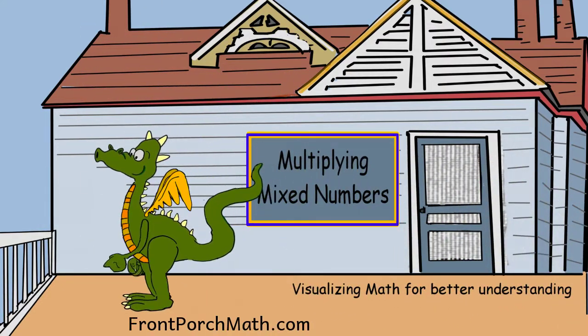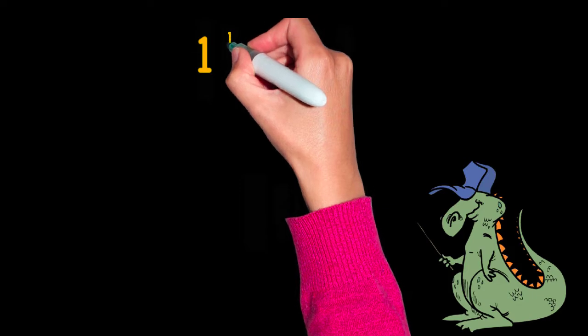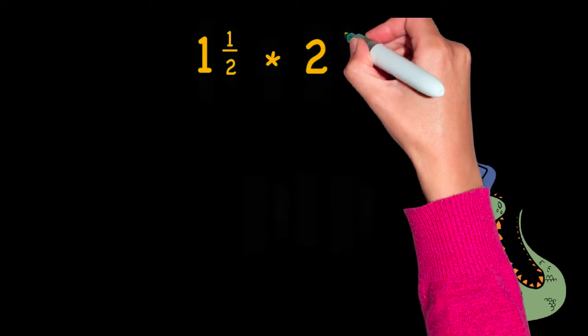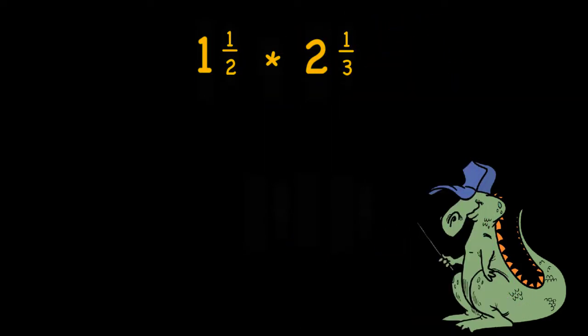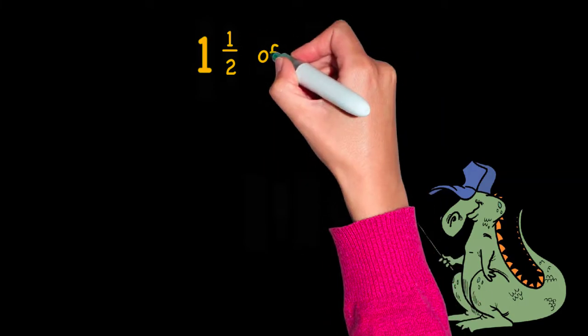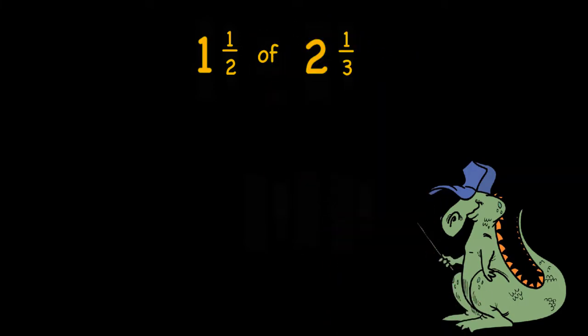Let's look at multiplying a mixed number times another mixed number. We will start with the example one and a half times two and one-third, or we could say one and a half of two and a third. I'm going to show you how to solve this three different ways.